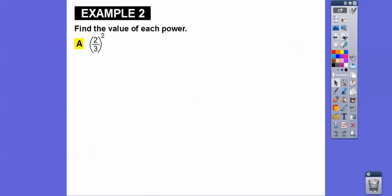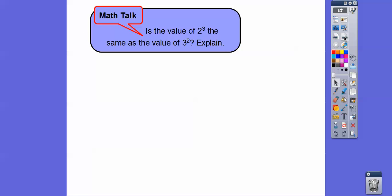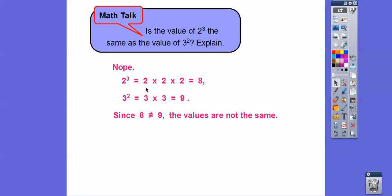For (2/3) squared: multiply top times top and bottom times bottom — 2 times 2 is 4, 3 times 3 is 9, so the answer is 4/9. Is 2 to the third the same as 3 squared? No: 2 to the third is 2 times 2 times 2, which is 8, and 3 squared is 3 times 3, which is 9 — 8 does not equal 9. A common error is thinking 2 to the third is 6 by multiplying 2 times 3, but the exponent tells you how many times to multiply the base.